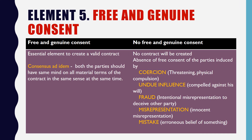Element 5: Free and Genuine Consent. It is an essential element to create a valid contract. We should also know consensus ad idem, which means both parties — the offerer and acceptor — should have the same mind on all material terms of the contract in the same sense at the same time. If there is no free and genuine consent, then no contract will be created. Absence of free consent of the parties is induced by five ways. The first is coercion, which means threatening or physical compulsion. The second is undue influence, which means being compelled against one's will.